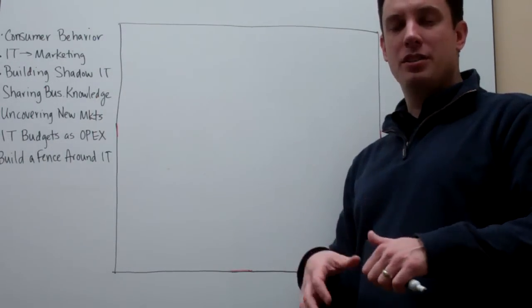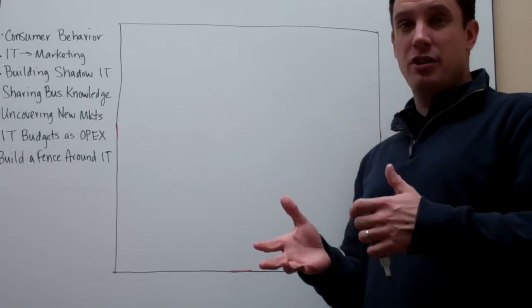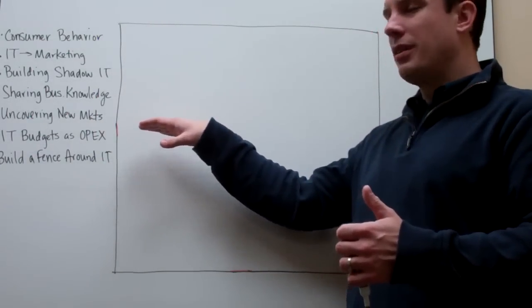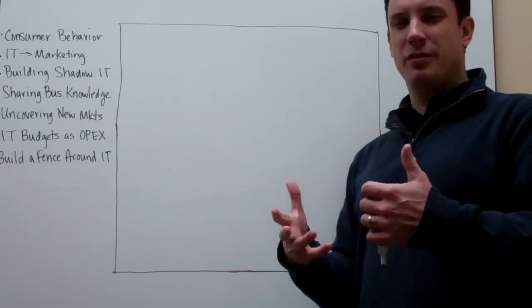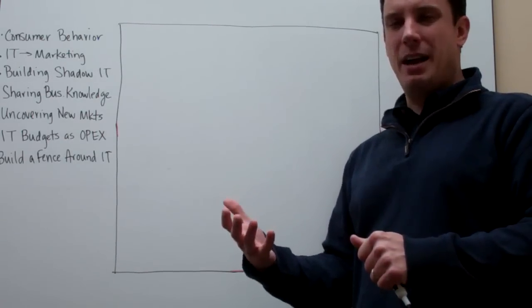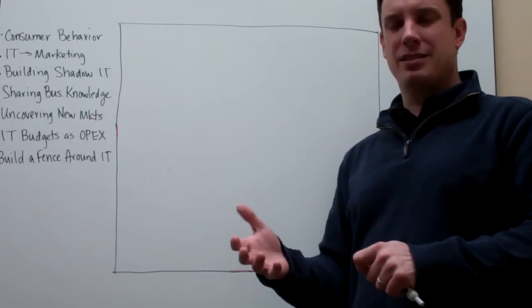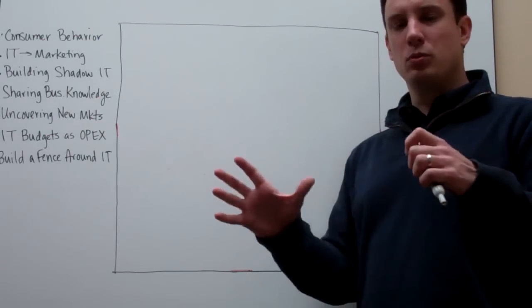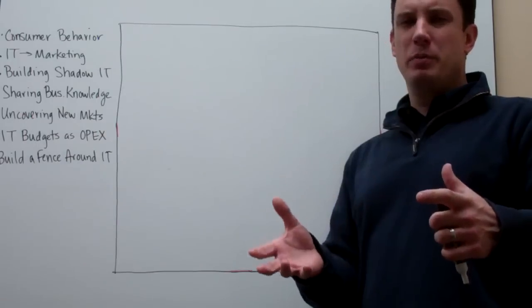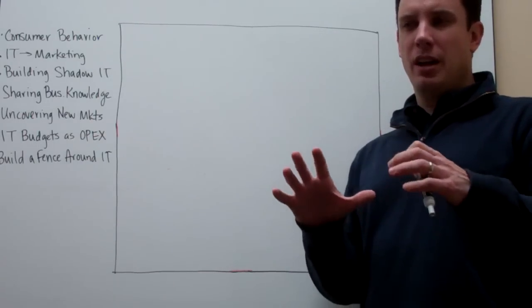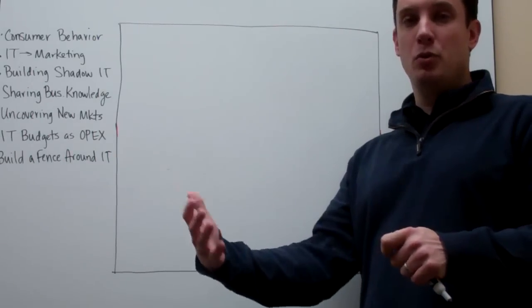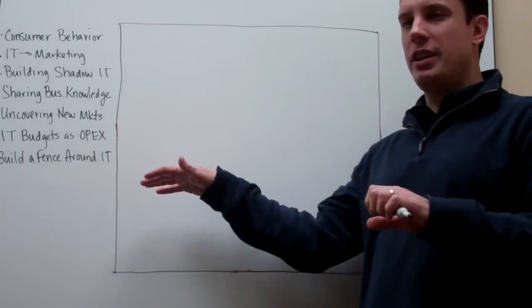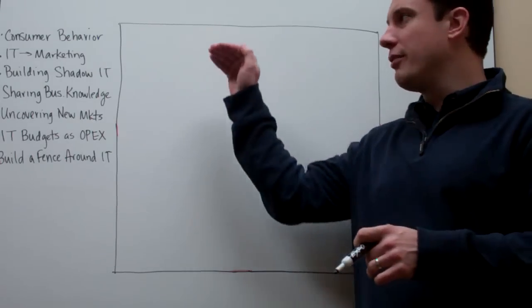We'll talk about how to uncover new markets, uncover new market research from the information that's going on both in the public space of the world as well as information that you have. We'll talk about changing IT budgets and how those are becoming OPEX. And then finally we're going to talk about some ways to rethink how IT is put together and if you're a business manager you may not care about that, but we're going to talk about why maybe putting a fence around IT is going to help you be able to get what you want out of IT or out of technology more importantly faster. So we're going to cover these in different videos. Let's go ahead and cover the very first one, consumer behavior.